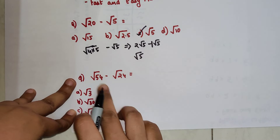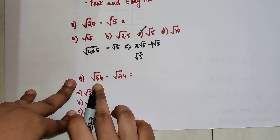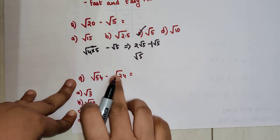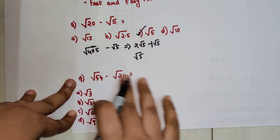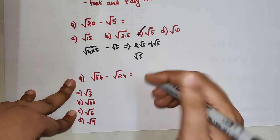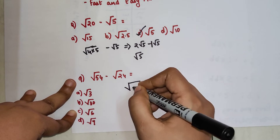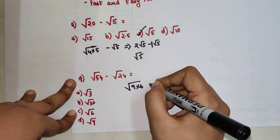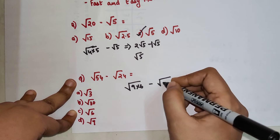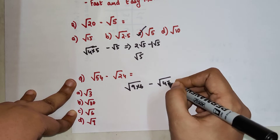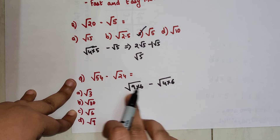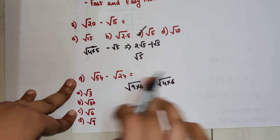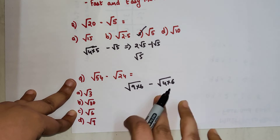Now for this one as well — we will write everything in terms of perfect squares; the factors will have to have perfect squares. So 54 can be written as 9 into 6, and 24 can be written as 4 into 6. I am trying to find the factors in such a way that something is common.